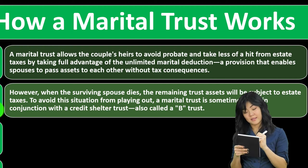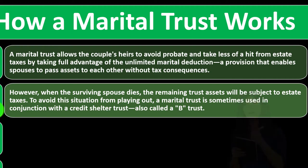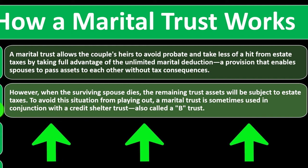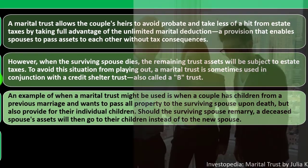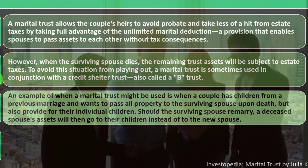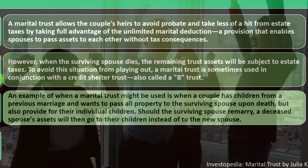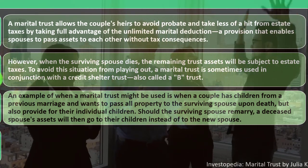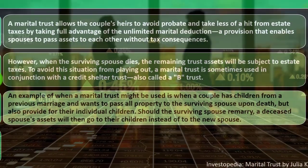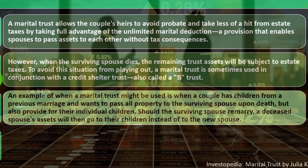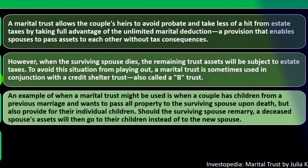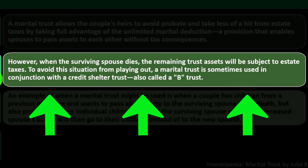To avoid this situation, a marital trust is sometimes used in conjunction with a credit shelter trust, also called a B trust. You want to maximize the exemptions — like standard deductions for income taxes — per person, ensuring that both spouses' exemptions are maximized when the estate tax finally applies, if your assets exceed the threshold subject to estate taxes.